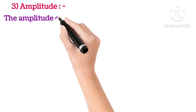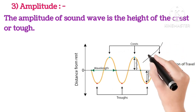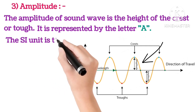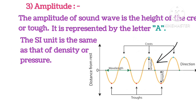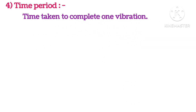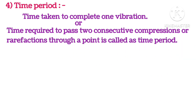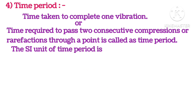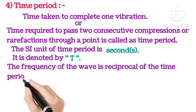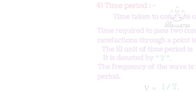Amplitude: The amplitude of a sound wave is the height of the crest or trough, represented by the letter A. The SI unit is the same as that of density or pressure. Time period: The time taken to complete one vibration, or the time required for two consecutive compressions or rarefactions to pass through a point, is called the time period. The SI unit of time period is the second, denoted by T. The frequency of the wave is reciprocal to the time period, so frequency equals 1/T.